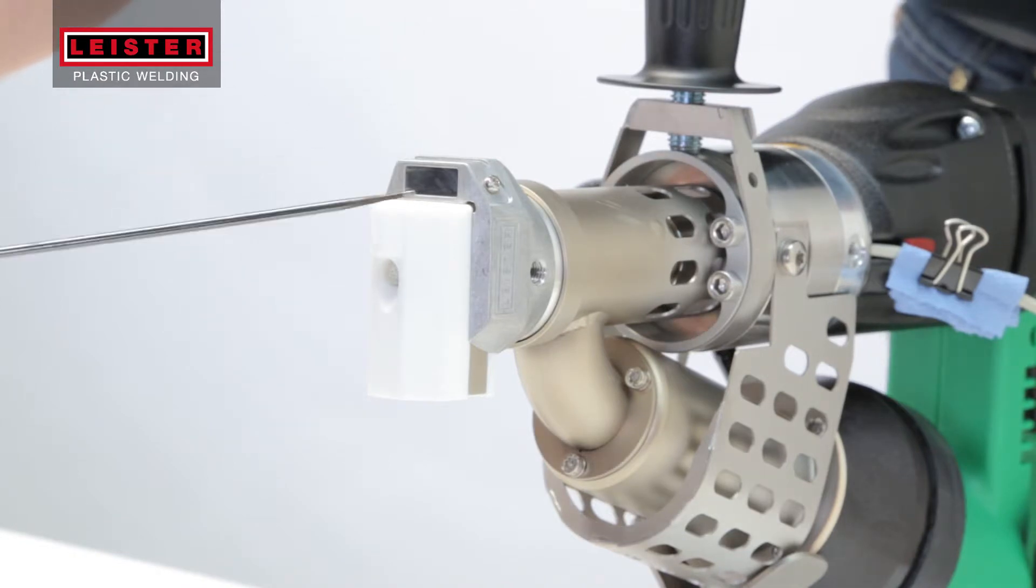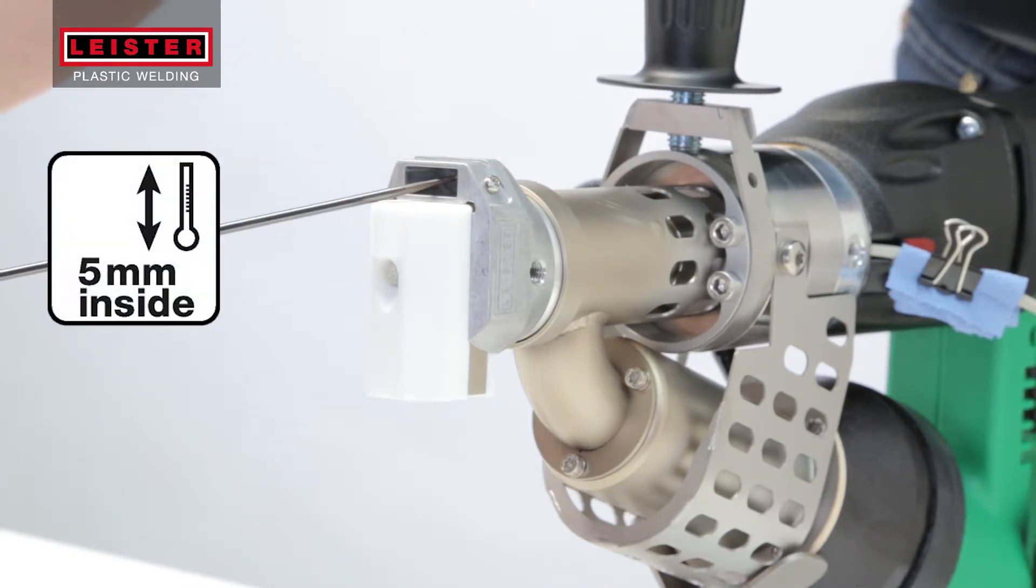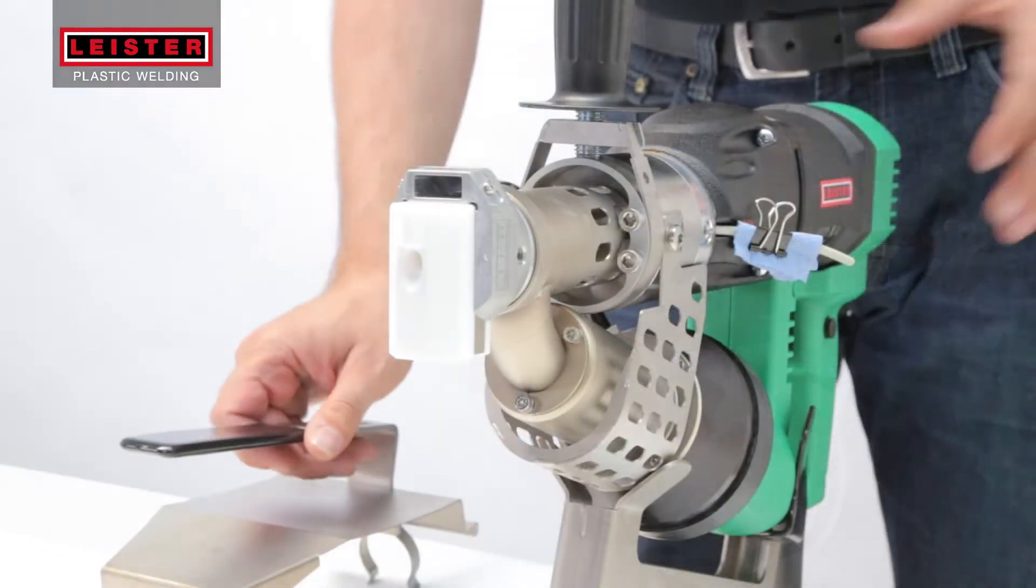Measure the air temperature at 5 millimeters in the preheating nozzle with a clean probe. By turning the red potentiometer, you can adjust the temperature as needed.